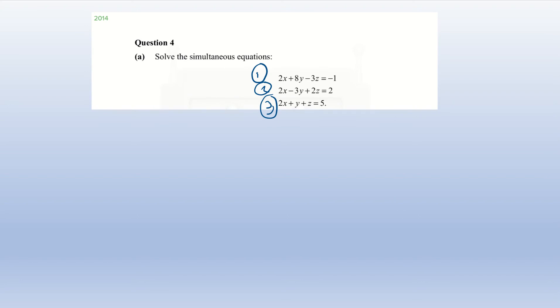Looking at the three equations, the first thing I'm going to do is label them: equation one, equation two, and equation three. I'd advise you to give yourself as much space as possible and to be as organised as possible, because you are going to have a lot of equations throughout your working out.